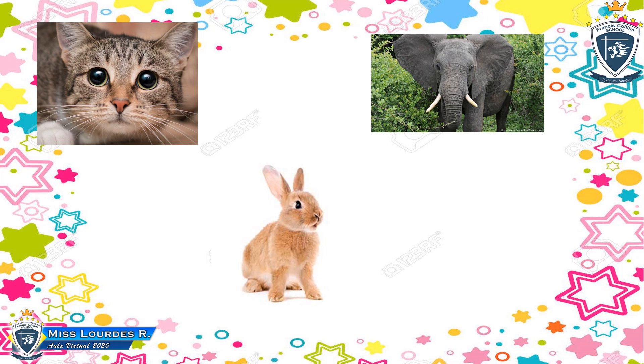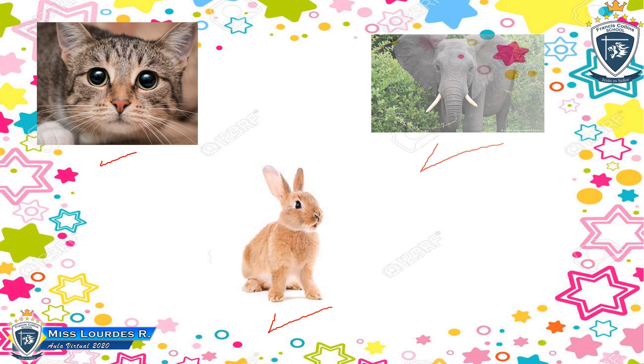Here we have a cat, yes, a cat. Here it is a rabbit, yes, and an elephant. It is an elephant, okay? Let's continue. What is it? It is an ant, yes, ant.